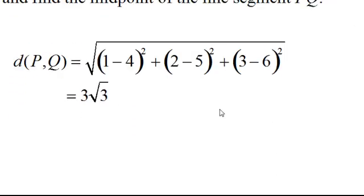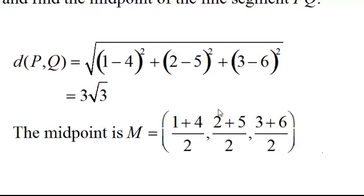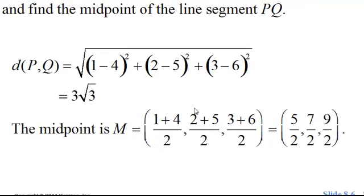To find the midpoint, it's (1 + 4)/2, (2 + 5)/2, and (3 + 6)/2. Adding those, we get 5/2, 7/2, and 9/2.